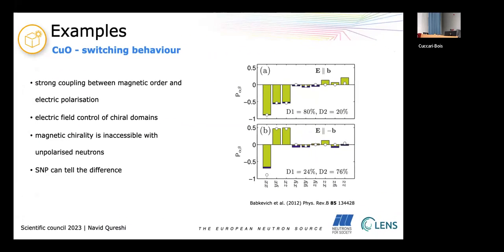A big deal in multiferroics is of course their switching behavior because you want to write and read information. And in copper oxide you have a strong coupling between magnetic order and electric polarization which gives you the possibility to control chiral domains with an electric field. So you can switch from a left-handed spiral to a right-handed spiral. And this is something you cannot access or measure with unpolarized neutrons because the magnetic chirality is inaccessible. This is also related to this vector property which you cannot extract by measuring the squared amplitude.